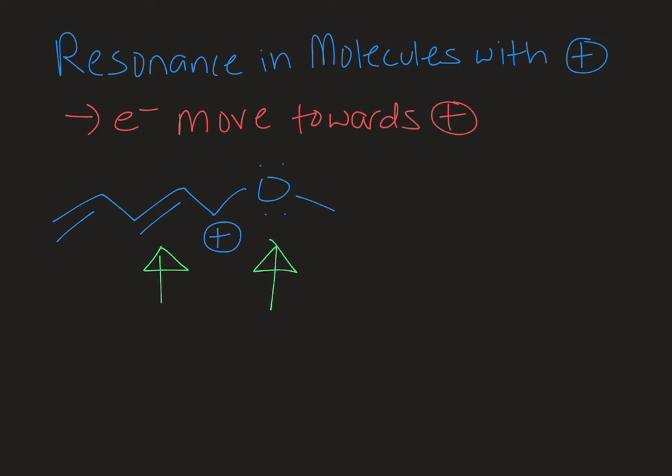And on the right-hand side of the positive charge I have a heteroatom, in this case an oxygen atom, and it has lone pairs of electrons on it. So I actually have electrons adjacent to that positive charge on either side. So I could start going either direction.